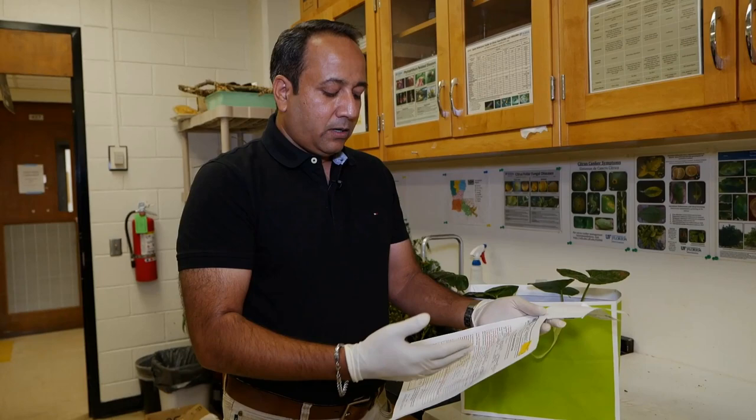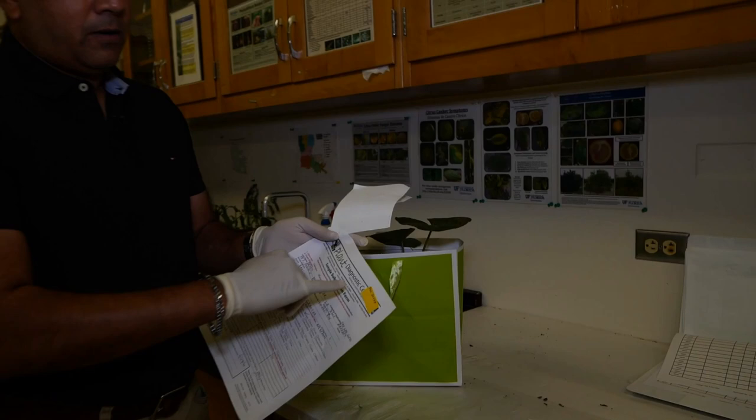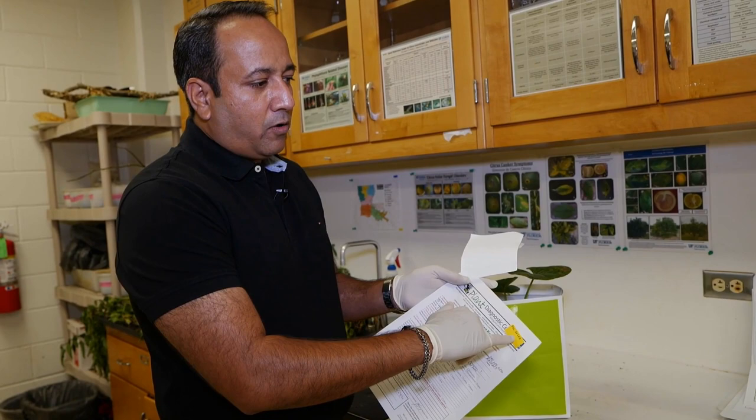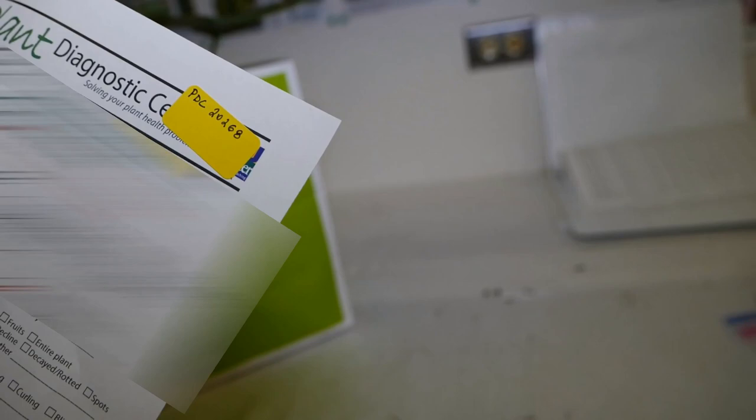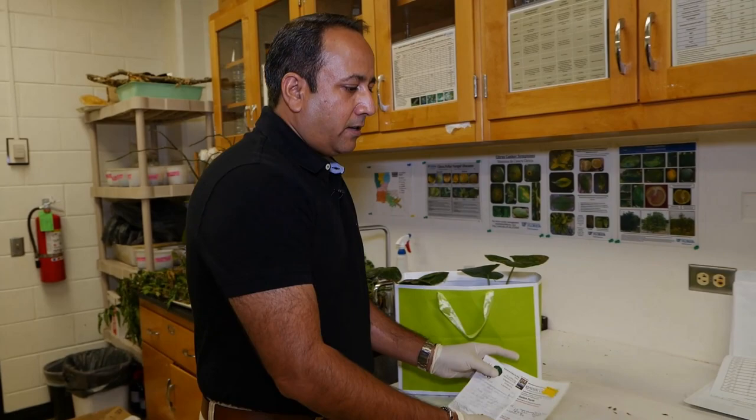When a sample comes in, we log it with a number, a unique number that will stay permanently with this sample for the time period we keep our records. It's just a five-digit number - the first two digits are the year and the last three digits are the sample number. You can see even with COVID-19 we are at 268 samples this year. Generally at this point of the year, June-July, we are hitting about 500 to 600 samples, but because of COVID-19 shutdown we didn't receive that many samples.